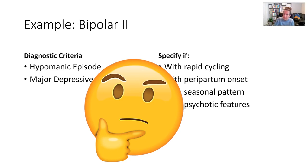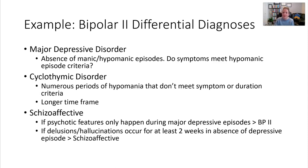You might wonder: what's the difference between that versus seasonal affective disorder? Or what's the difference between Bipolar 2 with peripartum onset versus postpartum depression? That's what differential diagnosis is for. For Bipolar 2, differential diagnoses include major depressive disorder — in MDD you don't have manic or hypomanic episodes, so you can only give the Bipolar 2 label if symptoms meet that hypomanic episode criteria. Cyclothymic disorder is typically a more mild but longer-lasting version that includes numerous periods of hypomania that don't quite meet all the symptom or duration criteria.